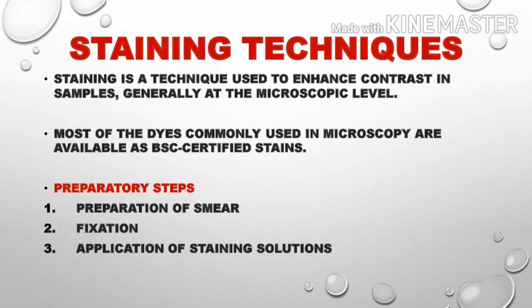In gram staining, the basic steps are: apply crystal violet, add the mordant, wash with alcohol as a decolorizer, and apply the counterstain safranin. So the basic idea is: preparation of smear, fixation, application of staining solution, and mounting on the microscope.